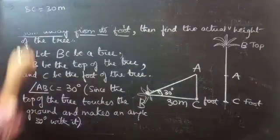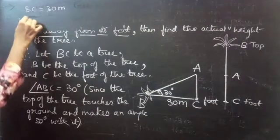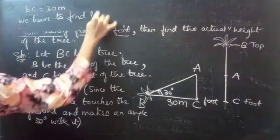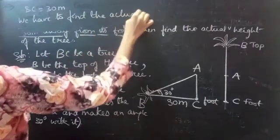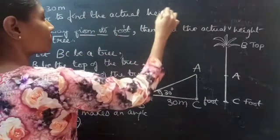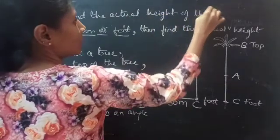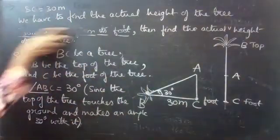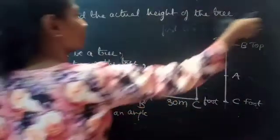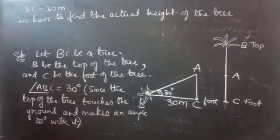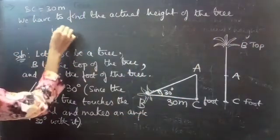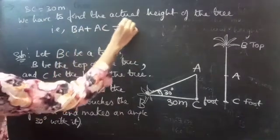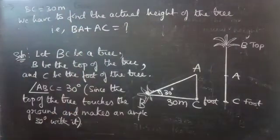We have to find the actual height of the tree. The actual height is BA plus AC.